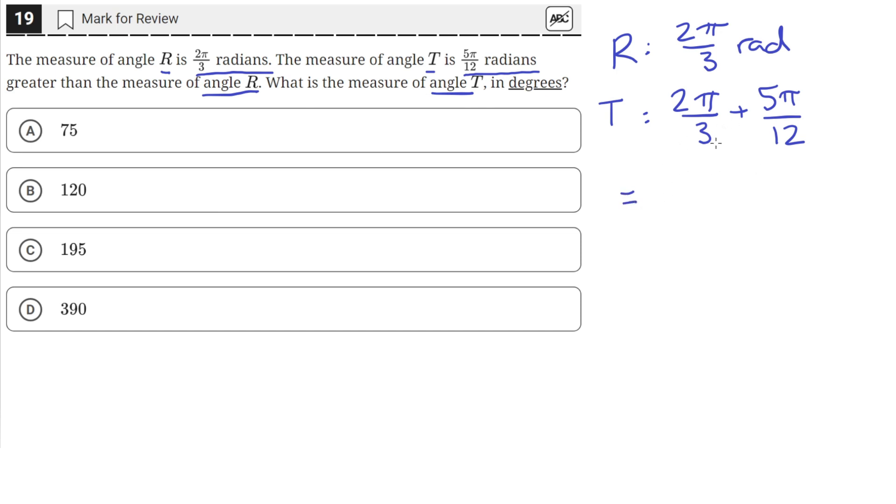To add these fractions together, we need to turn the denominator of the first fraction into 12. We can do that by multiplying this fraction by 4/4, which will give us 8π in the numerator and 12 in the denominator. And we'll add that with 5π/12, which will give us 8 plus 5 is 13. So 13π/12.